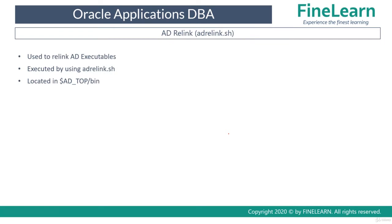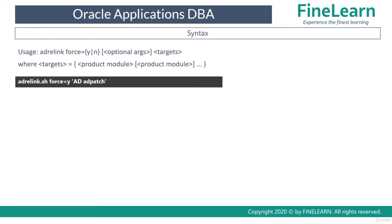The adrelink utility, or adrelink.sh, is an AD utility used to relink executables. Just as an Oracle DBA can relink Oracle Home binaries using the 'relink all' command, if any executable in an AD product is corrupted it can be relinked using adrelink. The script adrelink.sh is located in ADTOP/bin. The syntax is: adrelink.sh force=y followed by the name of the AD executable you want to relink.